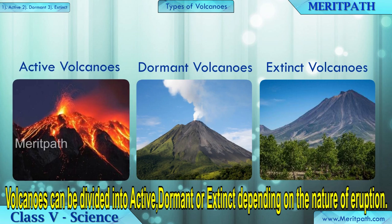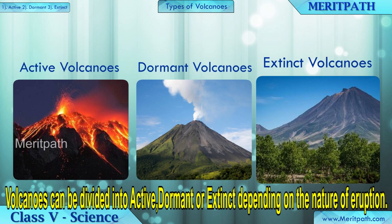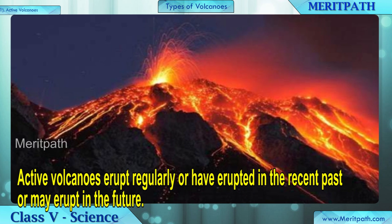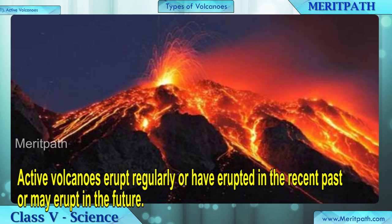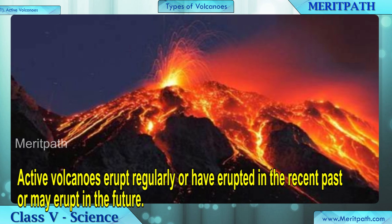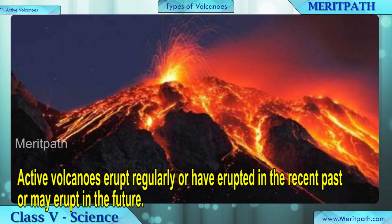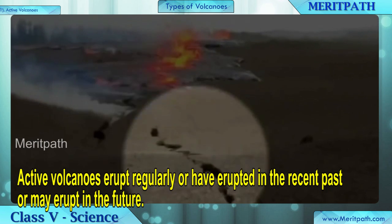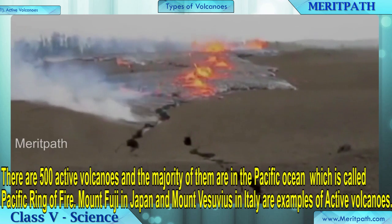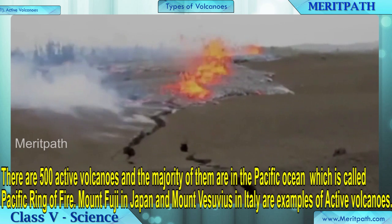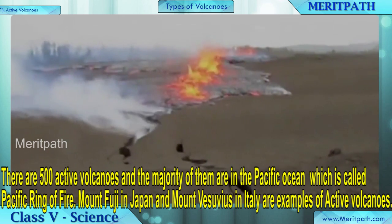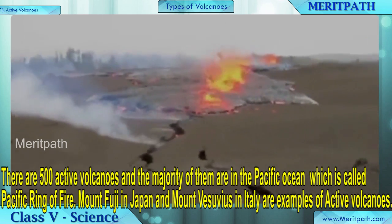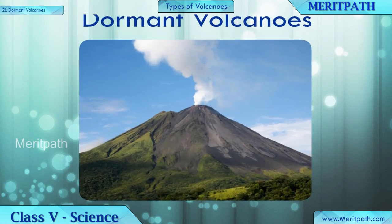Volcanoes can be active, dormant, or extinct depending on the nature of eruption. Active volcanoes erupt regularly, or may have erupted in the recent past, or may erupt in the future. There are 500 active volcanoes, and the majority of them are present in the Pacific Ocean, which is called the Pacific Ring of Fire.